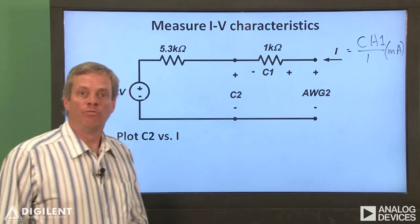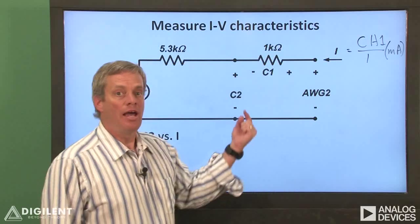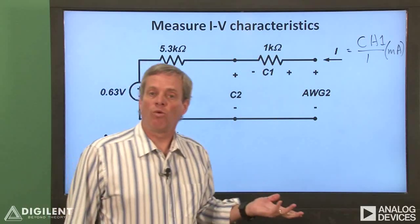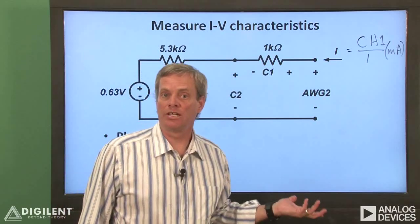Now that we have the voltages at the terminals of the Thevenin circuit, channel 2 of our oscilloscope, and the current going into the Thevenin circuit, we can create an XY plot to directly display the voltage-current characteristic of the circuit itself.